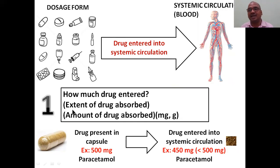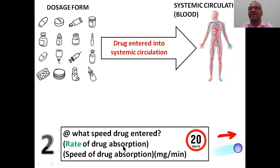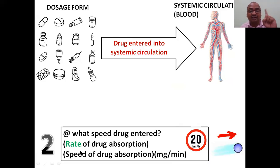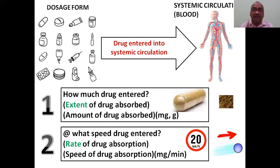How much drug entered is called the extent of drug absorption — also called the amount of drug absorbed — and it is always measured in milligrams and grams. The second question is: at what speed did the drug enter? Speed is always related to time — like 20, 30, or 60 kilometers per hour. This is called the rate of drug absorption, or speed of drug absorption. So two points are important: extent of drug absorption means amount, and rate means speed.